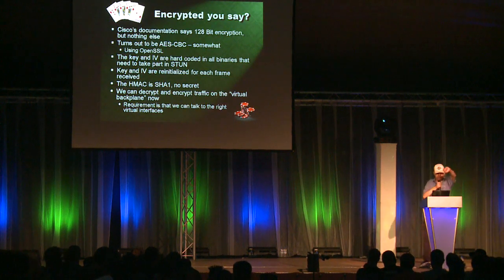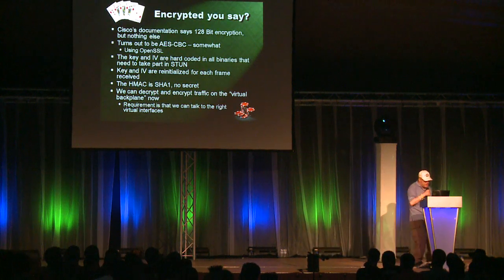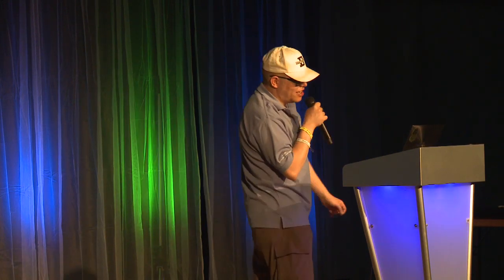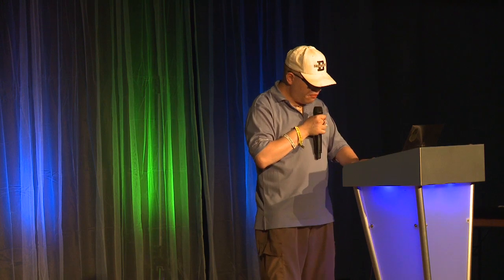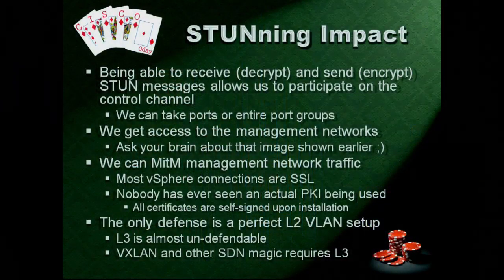The HMAC bit — the one you can set saying 'this is HMAC' — turns out to be SHA-1. And even I know that if you want an HMAC, there needs to be some secret. It's not there — it's just SHA-1. So we can actually decrypt the traffic. This protocol being called STUN has some stunning impacts, because we can also re-encrypt traffic — meaning we can do the same thing as talking on the backplane of a 65000-series Cisco Catalyst switch.